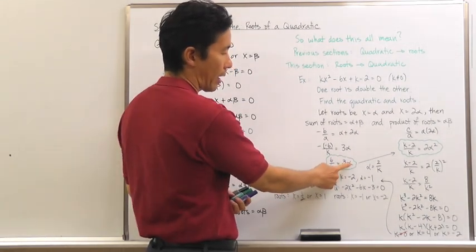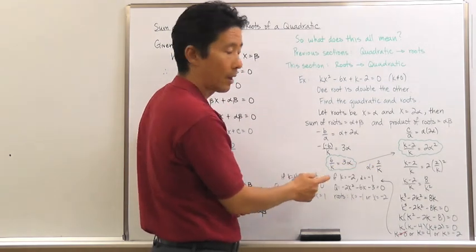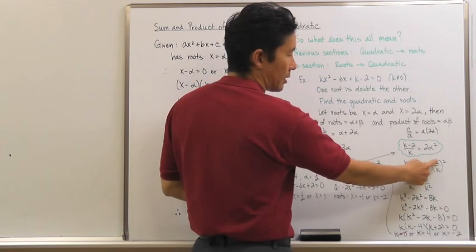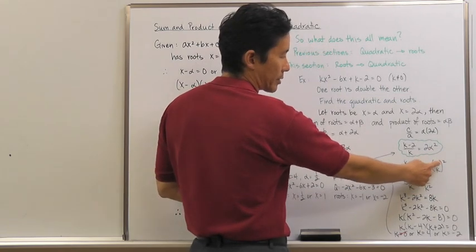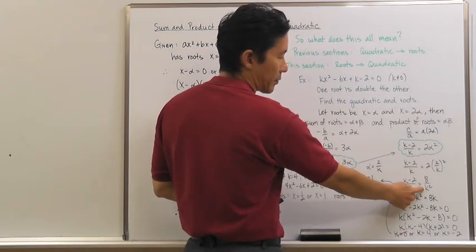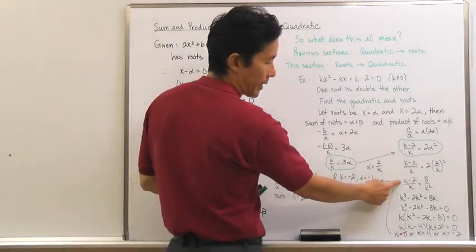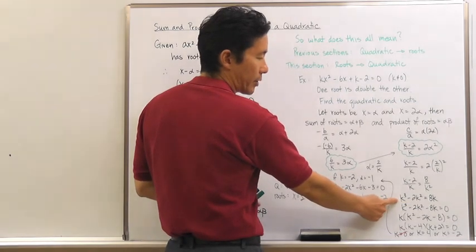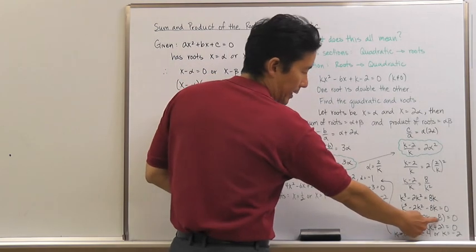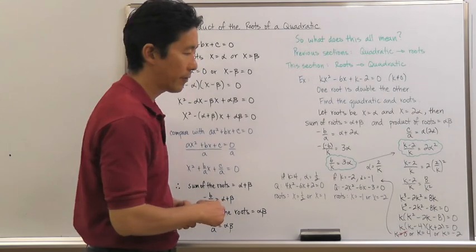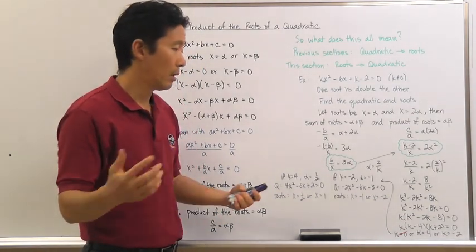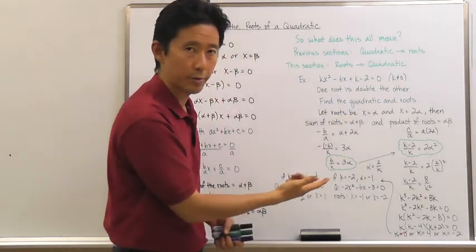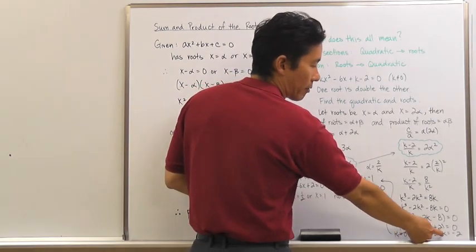I'm going to use the substitution method. Solving for alpha from the first equation by dividing both sides by 3 gives alpha = 2/k. Substituting into the second equation: (k − 2)/k = 2 × (2/k)². Since (2/k)² = 4/k², that gives 8/k². Cross-multiplying yields k³ − 2k² = 8k. Setting this equal to zero, factoring out k, and then factoring the quadratic gives k = 0, k = 4, or k = −2. Since k cannot equal 0, the only solutions are k = 4 or k = −2.